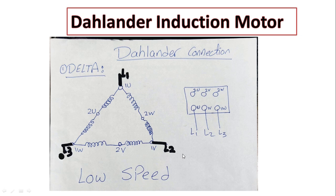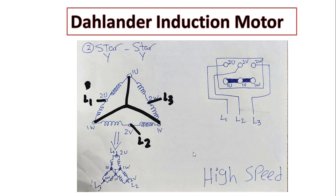But what if we want to connect it as star-star connection or double star connection? Here we will get the high speed feature, but we have to connect it in a different way. As you can see, the power supply will be connected to 2U, 2V, 2W.